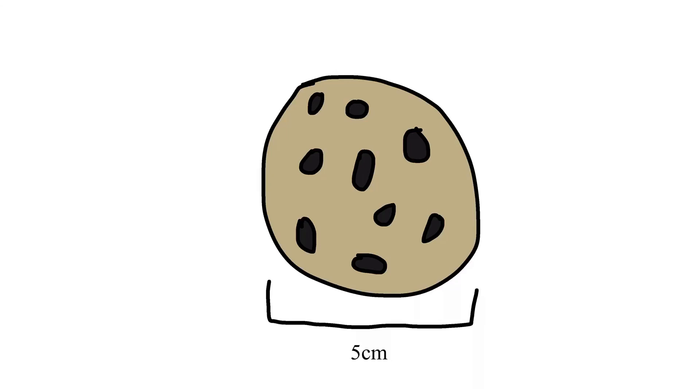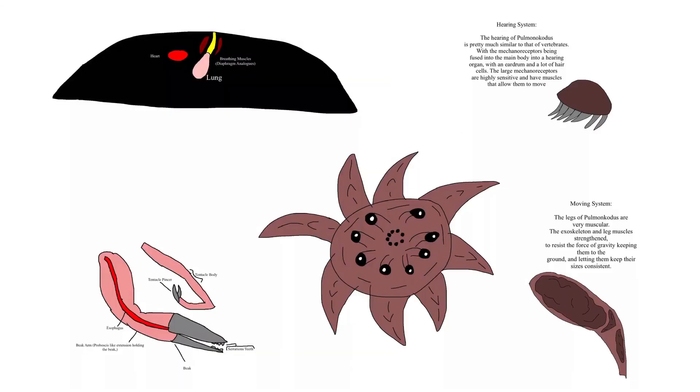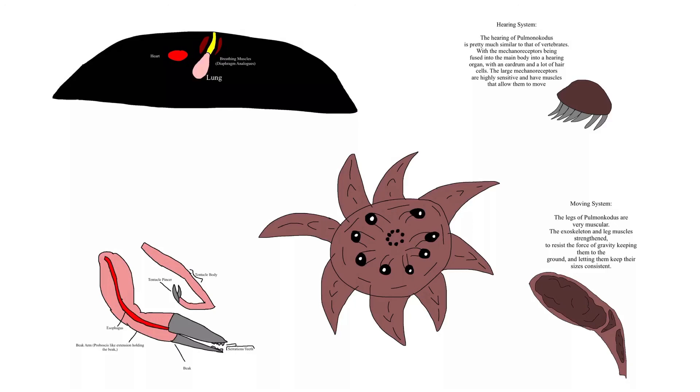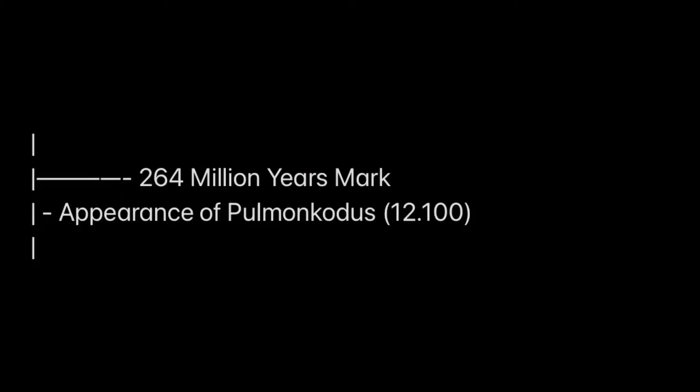With their issues solved, these full terrestrial Iaquilopods will be free to spread across the currently empty eastern continent. I'll call them Pulmonicadis and they'll appear 12.1 million years into the timeline.